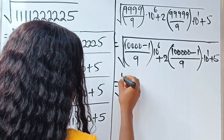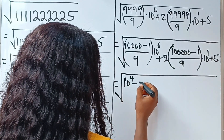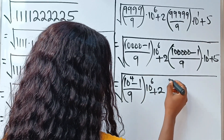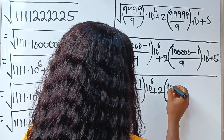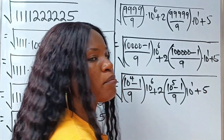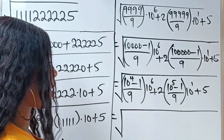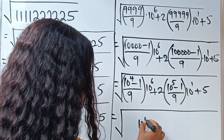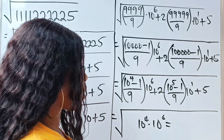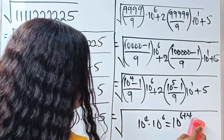Now we continue. So this is equal to the square root of: 10,000 is the same thing as 10 to the power of 4 minus 1, divided by 9. Then multiply by 10 to the power of 6, plus 2 brackets: this same thing as 10 to the power of 5 minus 1, divided by 9, multiplied by 10 to the power of 1, plus 5. Now let's open this bracket: 10 to the power of 4 multiplied by 10 to the power of 6. Once you have the same base and they are multiplying each other, you take one base — which is 10 — then you add the powers, okay? To give you 10 to the power of 10. So let's apply it here.